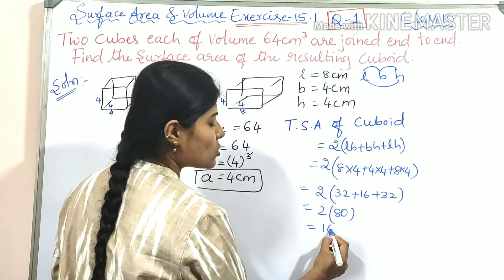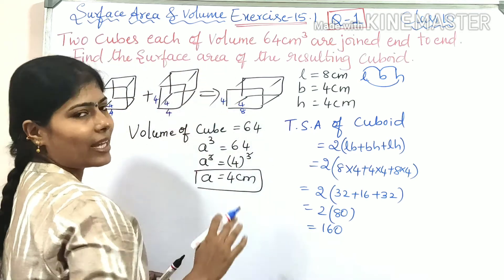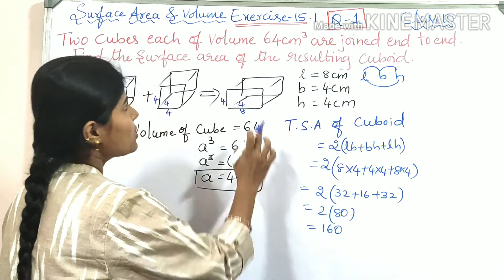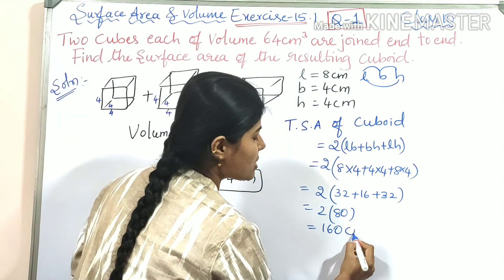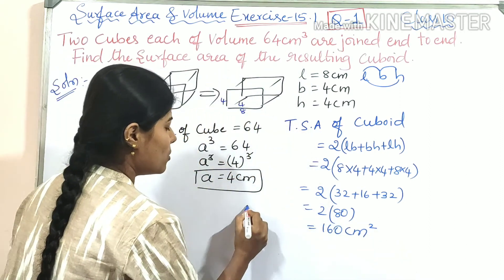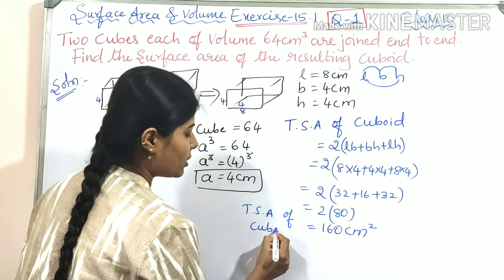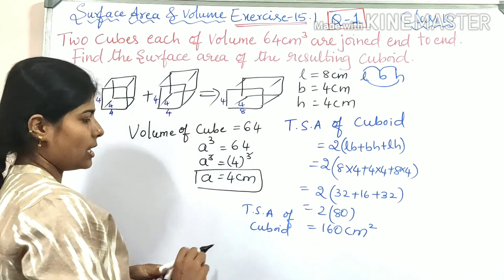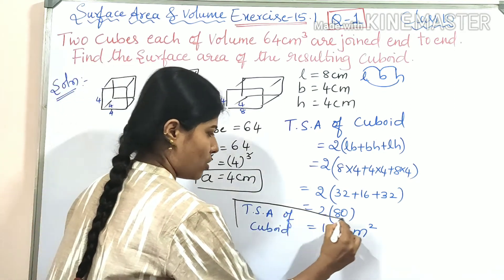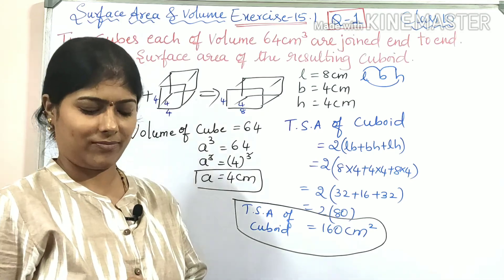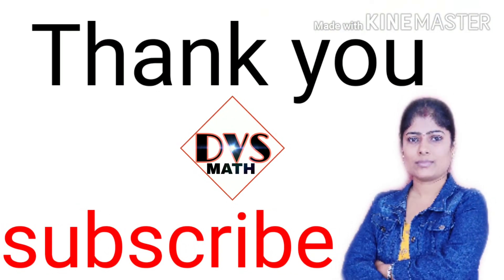Surface area is always written in square units, so it is centimeter square. Therefore, TSA of cuboid is 160 cm². Thank you for watching. For more videos, please subscribe to my channel. Thank you.